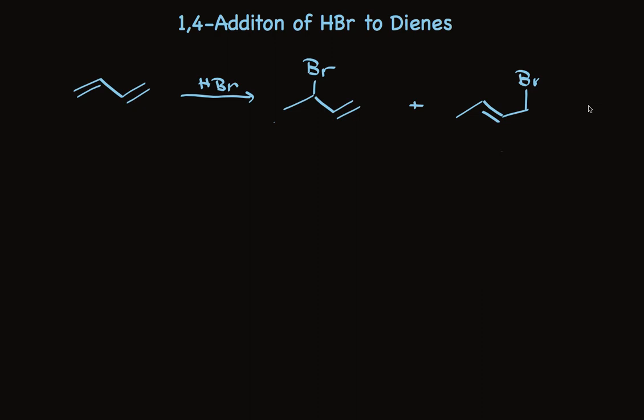But there's something else interesting about this reaction. The ratio of the products formed by 1,2 addition and 1,4 addition depends on the temperature that the reaction is run at. Look at these results. At minus 80 degrees, the ratio of the products is 81 to 19. Favors the 1,2 addition.